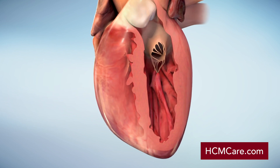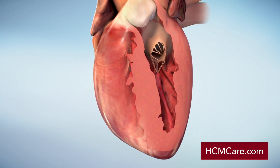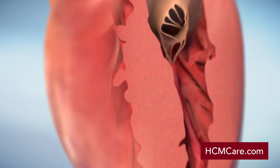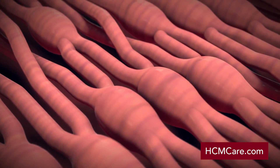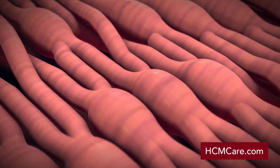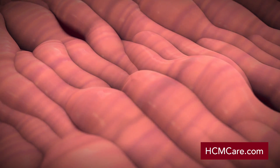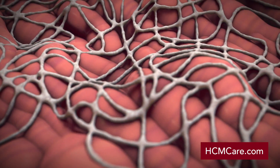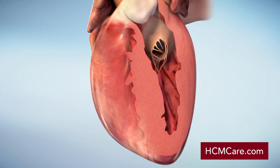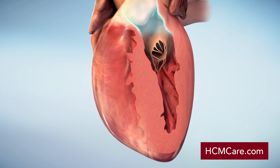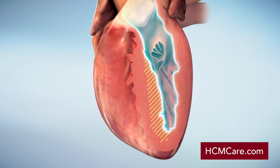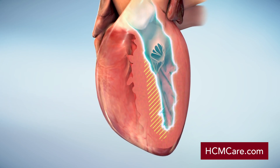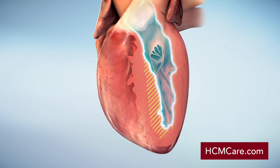Hypertrophic cardiomyopathy usually affects your left ventricle by thickening its walls. This happens because your heart muscle cells grow bigger. In some people, scar tissue may form between the muscle cells over time. Even though your cells are bigger, your heart stays about the same size. As a result, your left ventricle can't hold as much blood.